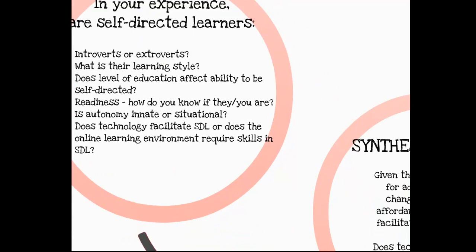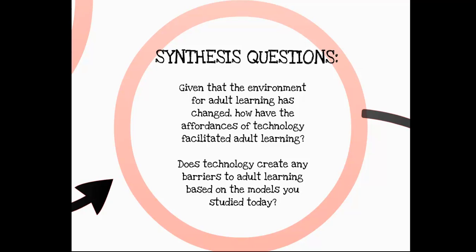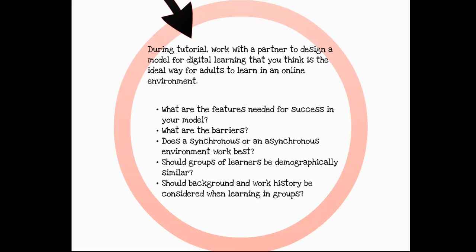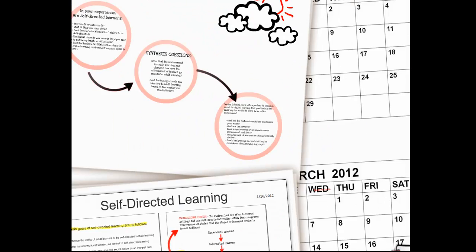Here are the synthesis questions for this video clip. Given that the environment for adult learning has changed, how have the affordances of technology facilitated adult learning? Does technology create any barriers to adult learning based on the models studied today? During tutorial this week, you're going to work with a partner to design a model for a digital learning environment that is the ideal way for adults to learn online — including features needed for success, barriers, whether synchronous or asynchronous works best, and whether demographic similarity or background and work history should be considered when learning in groups online.